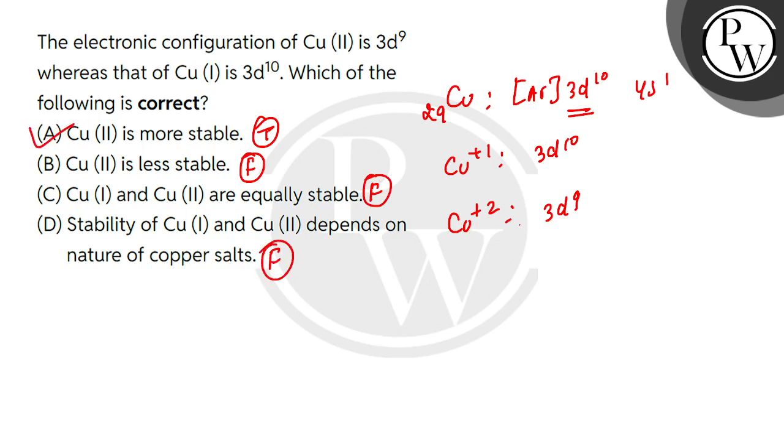So this option is correct. I hope you understood. Now what is the reason? Why is Cu2+ stable? Because Cu2+ has high hydration enthalpy.